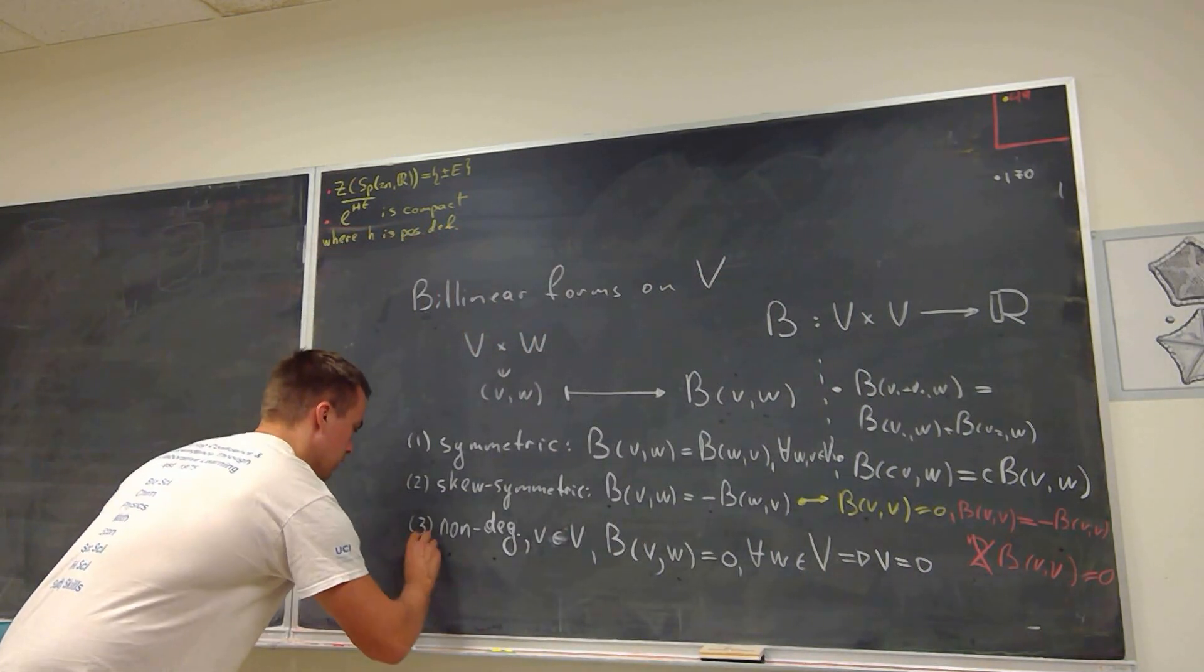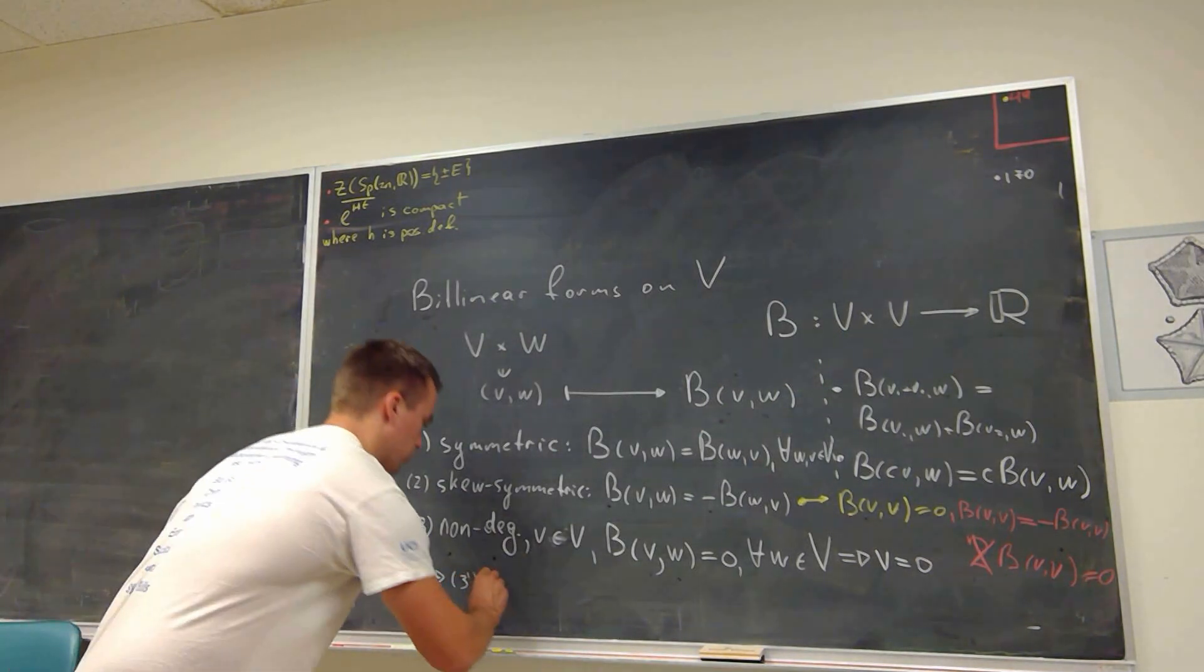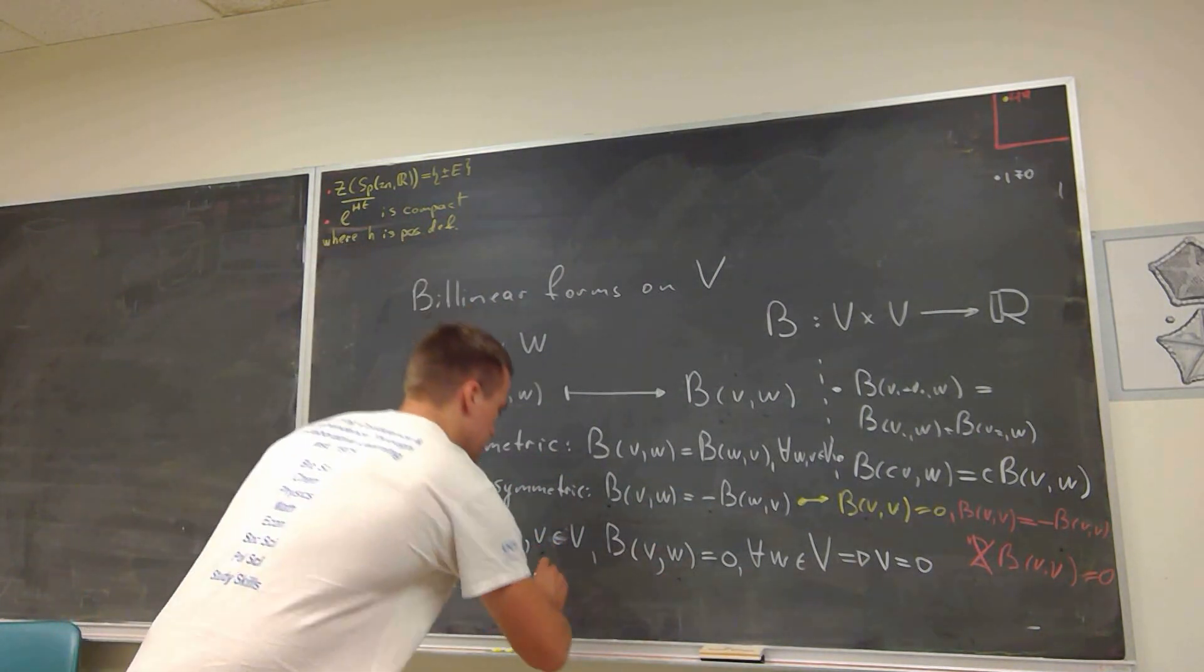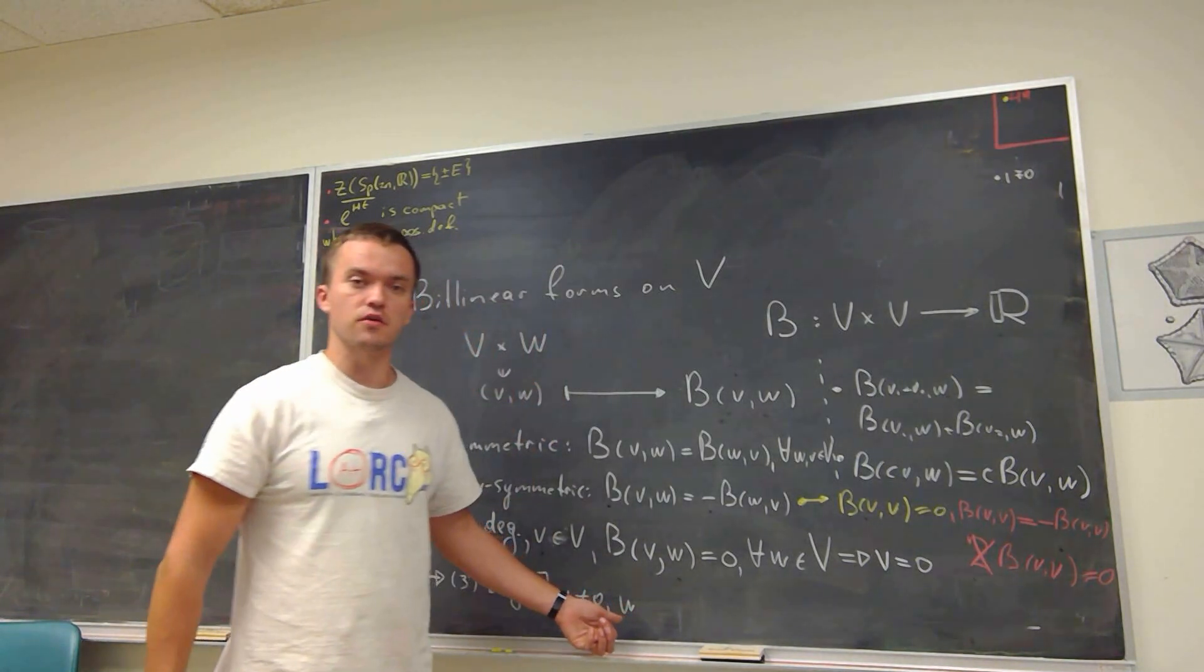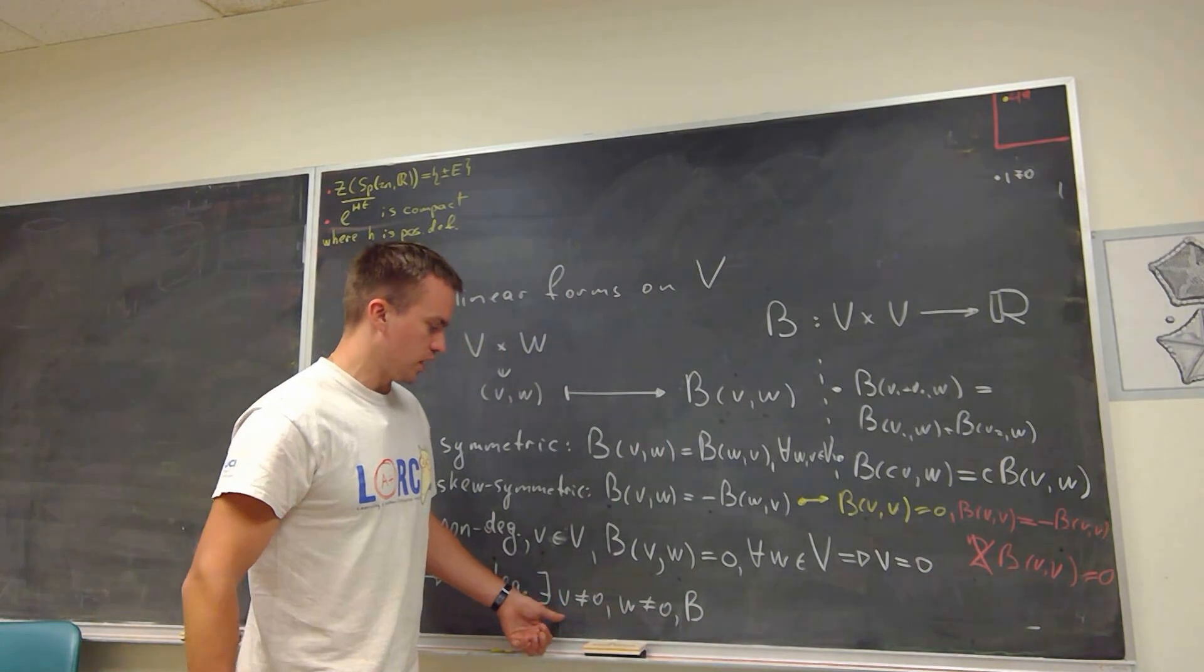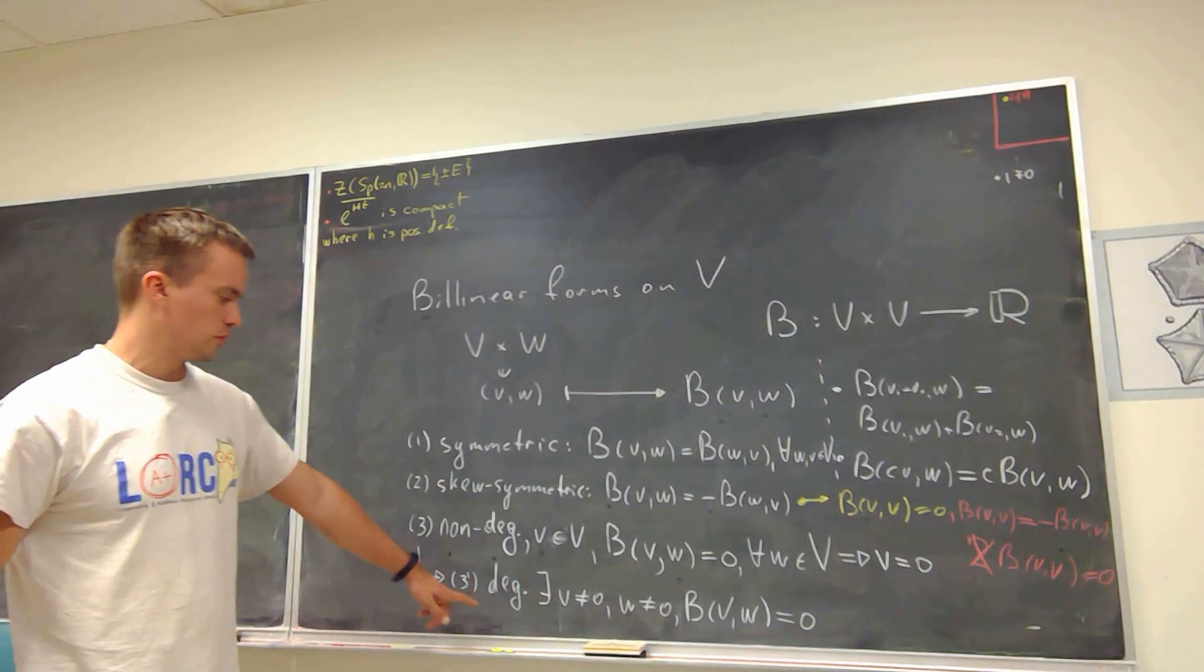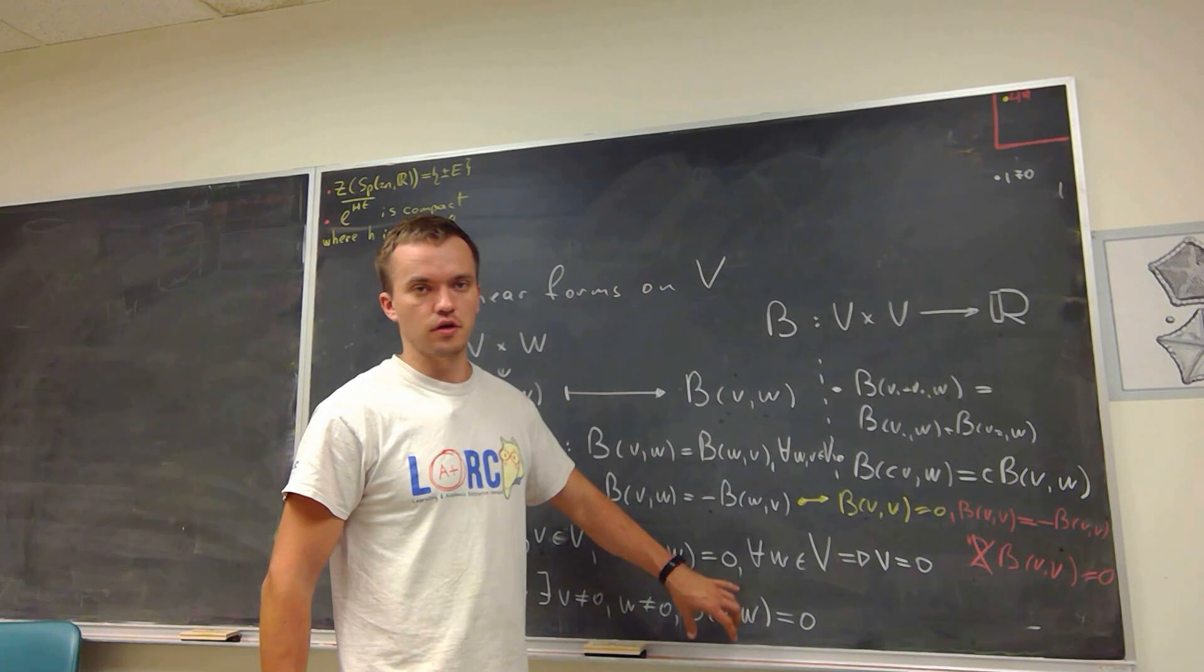And then from third property, we can conclude what is going to be my three prime. So three prime is going to be, if my form is going to be degenerate. So we're going to take the negation of this statement. It means there's going to exist some non-zero vector V. And there exists some non-zero vector W in my vector space V, such that if I'm going to take my form and evaluate on V and W, I'm going to get that my form is zero. So in other words, my form is going to be degenerate if I can find two non-zero vectors such that my bilinear form is going to be zero on those two vectors.